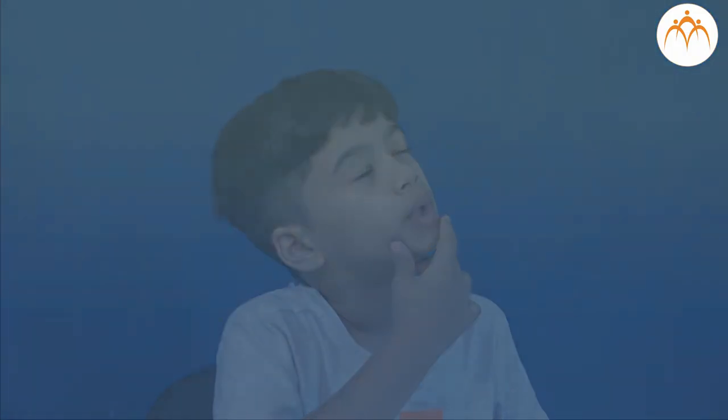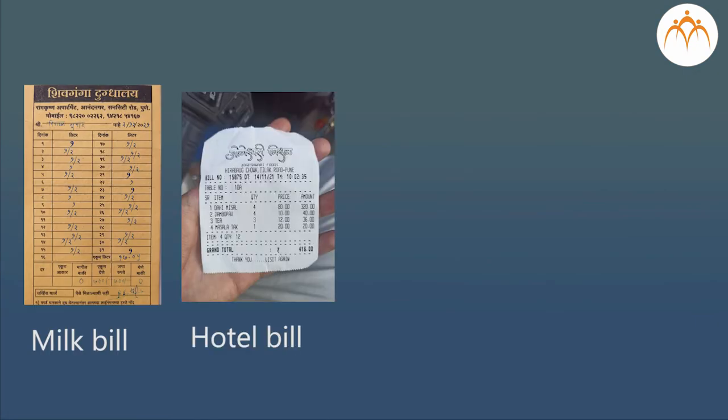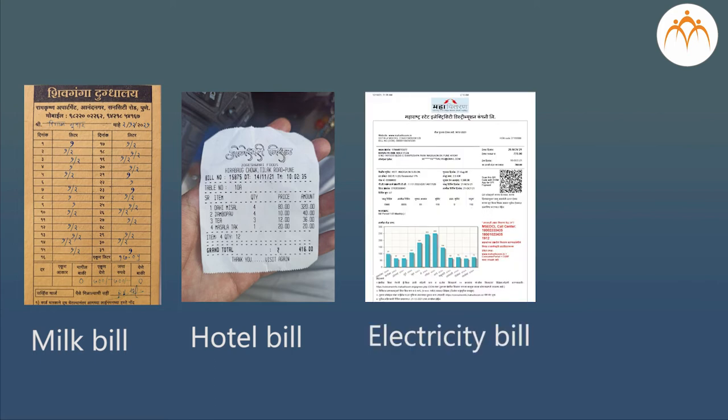Dada, when I went to the mall with my sister, the shopkeeper did not write the bill — he pressed certain buttons on a machine and then a long tape of paper came out. Yes, right! Nowadays most shops use such billing machines. In some places computers are used for making bills. Tell me, have you seen different types of bills? The milk bill, hotel bill, and electricity bill.